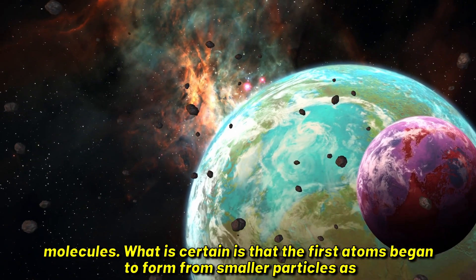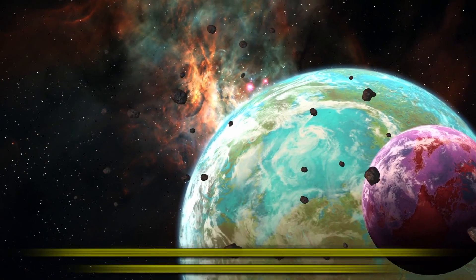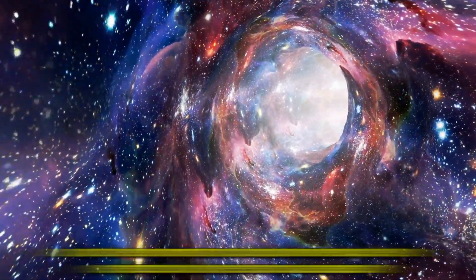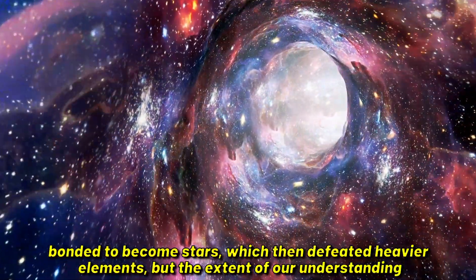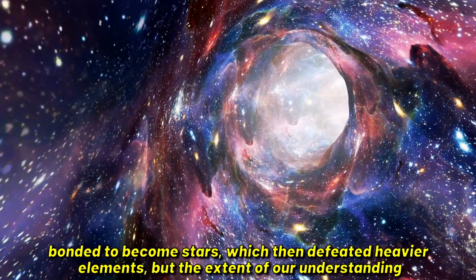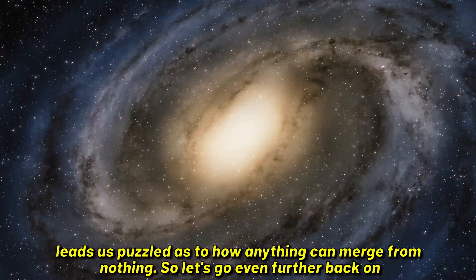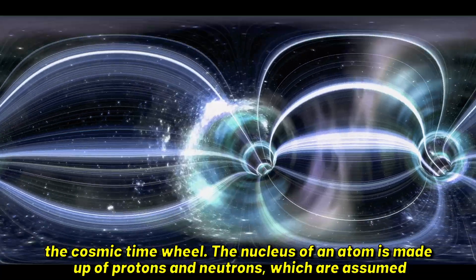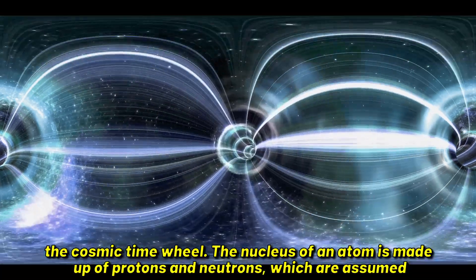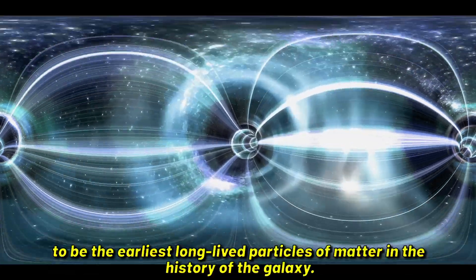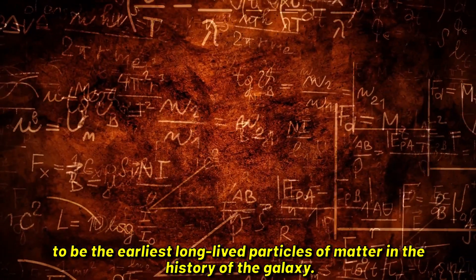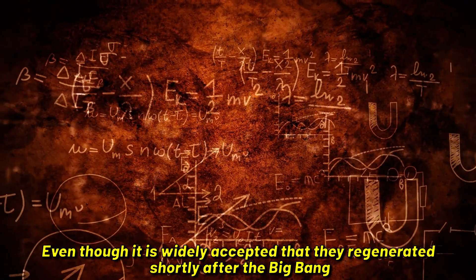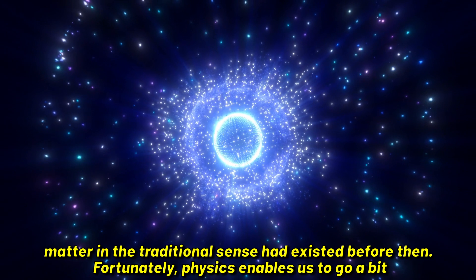What is certain is that the first atoms began to form from smaller particles as soon as the environment cooled down enough. We also understand how these atoms subsequently bonded to become stars, which then defeated heavier elements, but the extent of our understanding leads us puzzled as to how anything can merge from nothing. So let's go even further back on the cosmic time wheel. The nucleus of an atom is made up of protons and neutrons, which are assumed to be the earliest long-lived particles of matter in the history of the galaxy.